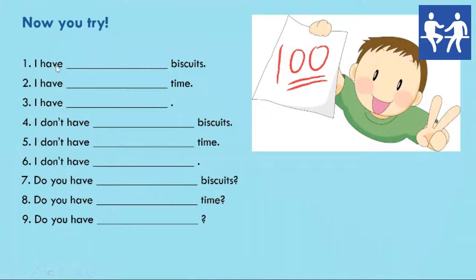Okay, let's have a look. 'I have ___ biscuits.' Biscuits is a countable noun — we can say one, two, three, four, five biscuits. So, we can say 'a few' or 'very few.' Remember, this is a positive sentence. 'A few' means some, but not many. And 'very few' means not many.